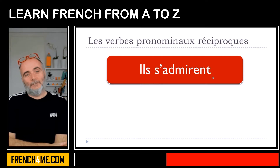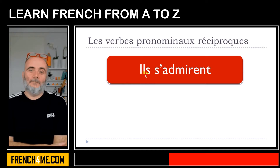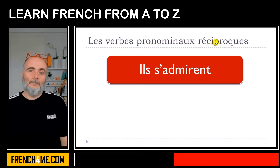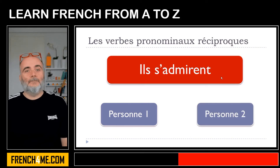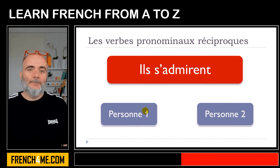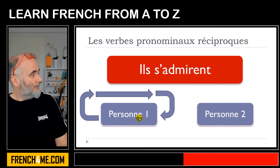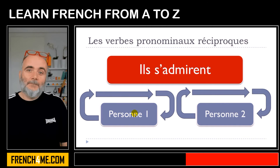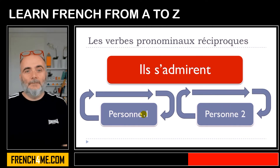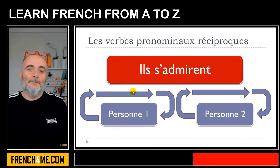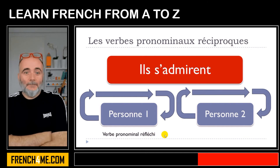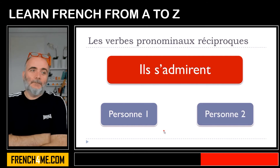Take ils s'admirent — s'admirer means to admire. You see the plural form and a pronominal verb, so you might think it's a verbe pronominal réciproque. But it's also possible that the two persons admire only themselves, not each other. In that case, ils s'admirent would be considered a verbe pronominal réfléchi.